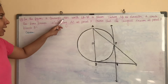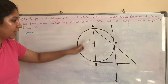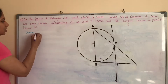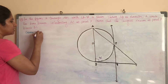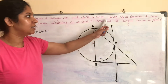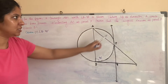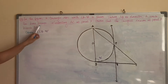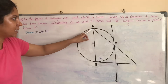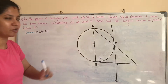In the figure, a triangle ABC with angle B equal to 90 degrees is shown. Given: angle B is equal to 90 degrees. Taking AB as diameter, a circle has been drawn, intercepting AC at point P. Second point: AB is the diameter of the circle.